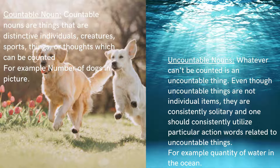Uncountable noun: whatever can't be counted is an uncountable thing. Even though uncountable things are not individual items, they are consistently solitary, and one should consistently utilize particular action words related to uncountable nouns. For example, quantity of water in the ocean.